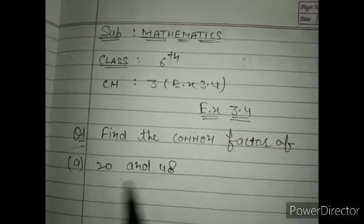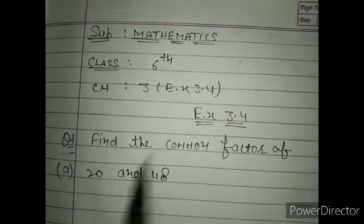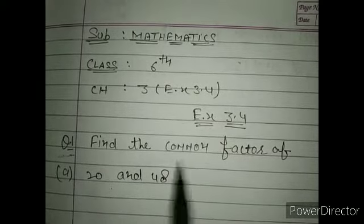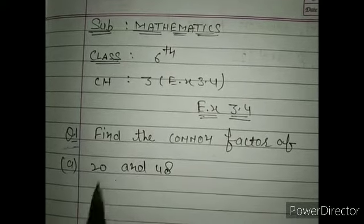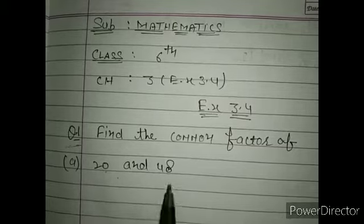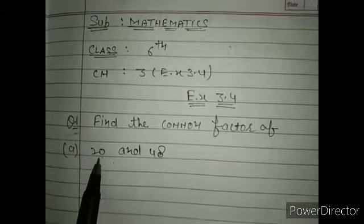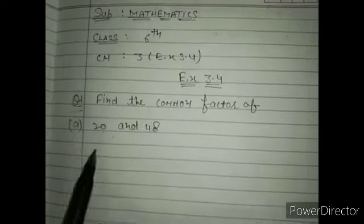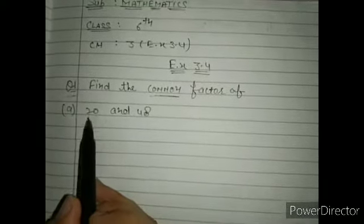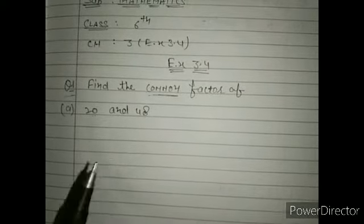Good morning students. We will start from Exercise 3.4 of Chapter 3. In this exercise we have to find the common factors. The first question is to find the common factor of 20 and 48. First we will find the factor of 20, then the factor of 48, then find the common factors.